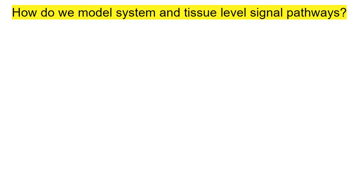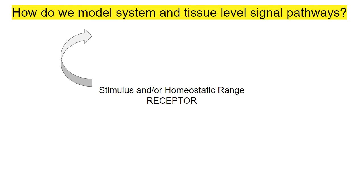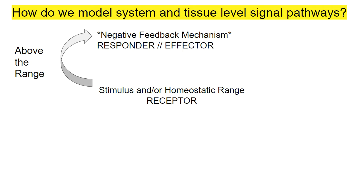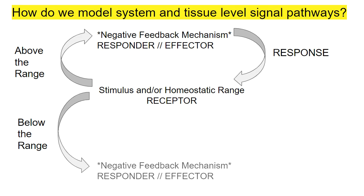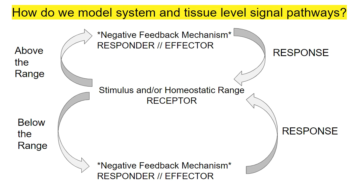When we model this system at the tissue level, we often have some type of receptor focused on a homeostatic range. If it gets too high and goes above the range, we have a responder or effector — some mechanism that kicks in to bring it back down. If it starts getting back inside the range but then goes down too far, we have another negative feedback mechanism that brings it back within the range. You see this hourglass model a lot when talking about negative feedback.